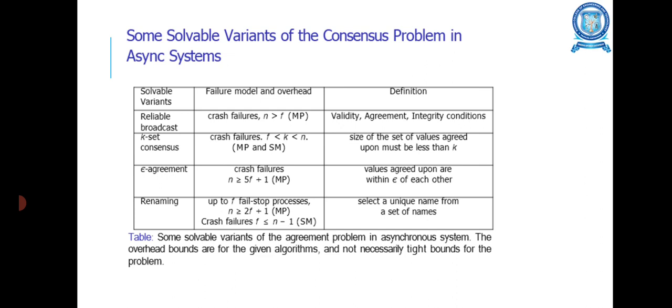Some solvable variants of the consensus problem in asynchronous systems: Reliable broadcast, K-set consensus, Epsilon agreement, and renaming. These solvable variants have failure models: Reliable broadcast has crash failures, K-set consensus has crash failures, and Epsilon agreement also has crash failures. The conditions are different, such as N greater than or equal to F for message passing reliable broadcast, and F is greater than or equal to K values between F and N.